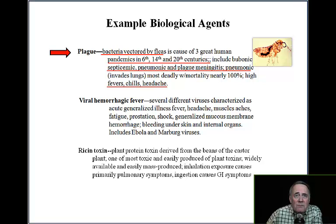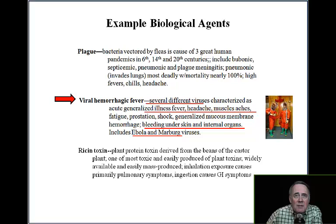Viral hemorrhagic fever encompasses several different viruses characterized by acute generalized illness: fever, headaches, muscle aches, fatigue, prostration, shock, generalized mucous membrane hemorrhage, and bleeding under the skin and internal organs. It includes the Ebola and Marburg viruses.